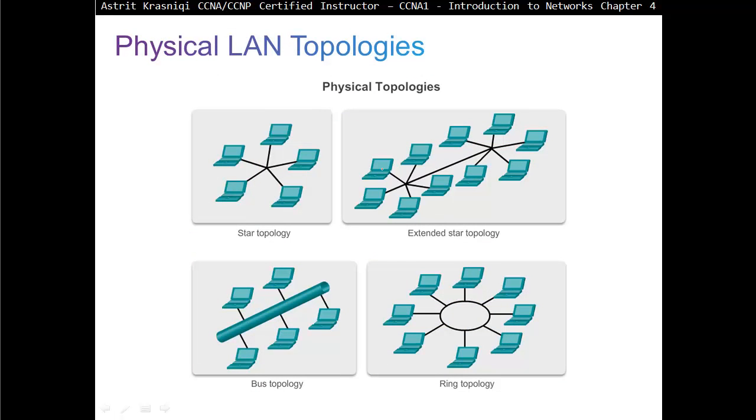Physical local area network topologies. In the LAN, we have star topology. All devices, this is the most used topology out there. Star topology has a device like a switch in the middle, and all the end devices connect to the switches as well as routers. Extended star topology is when you have two switches connected together. Star is for a small office. Extended star has two switches connected together sharing VLAN information and so on.